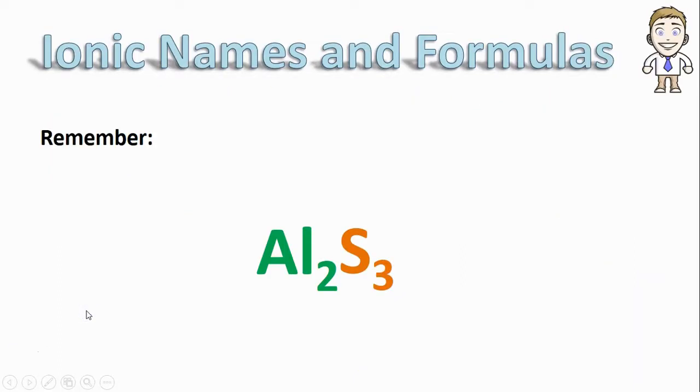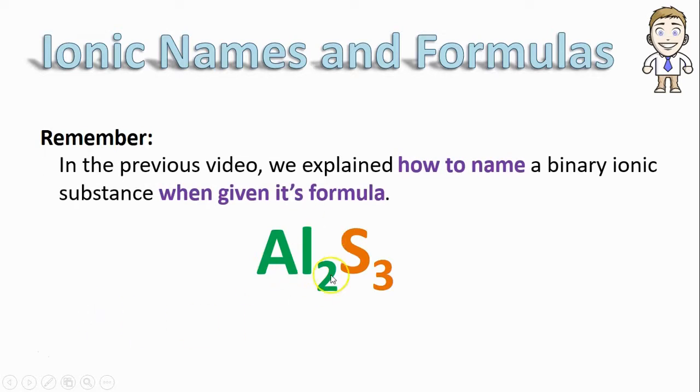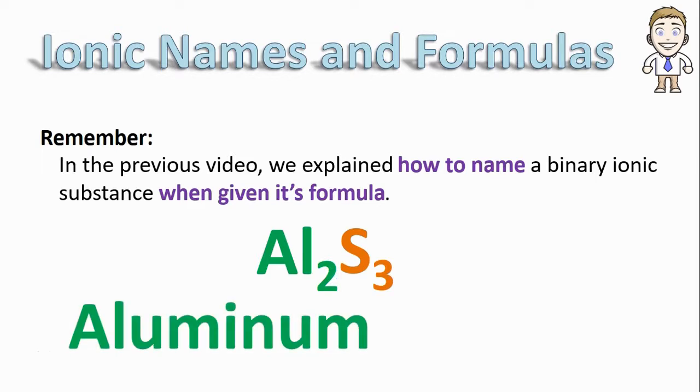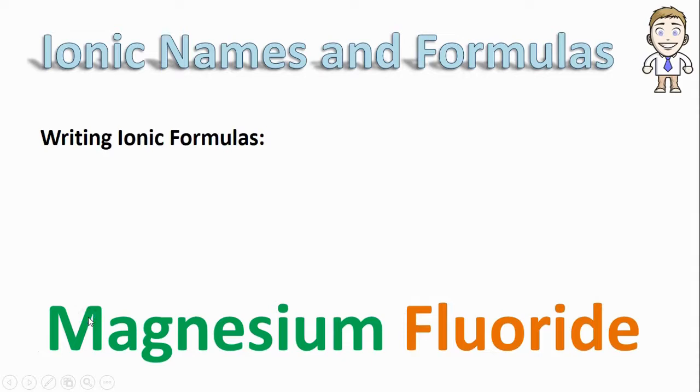Remember that the last video explained how to take a formula like Al2S3 and turn it into the proper name. So we could name the cation as aluminum, name the anion as sulfur, but change that ending to IDE, getting aluminum sulfide. This video is going to do the same thing just in the opposite direction. What if instead you were given the name first and had to figure out what the formula is?